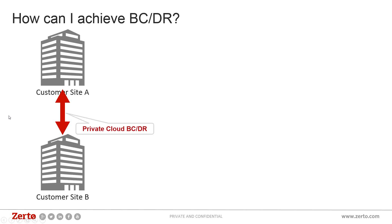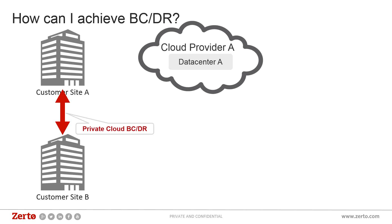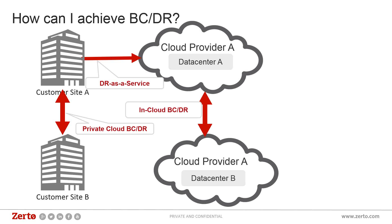The first typical approach is private cloud BCDR: you have site A and site B, with replication between them. It's on the pricier side depending on your economies of scale — if you're a large company it may make sense, but for smaller companies, maintaining a dedicated DR site can be challenging from a cost perspective. Then there's disaster recovery as a service, or DRaaS, where you have your production site and do disaster recovery to a cloud provider. For applications you don't want to manage, you can give production to the cloud provider and let them handle DR as well — we call that in-cloud BCDR.